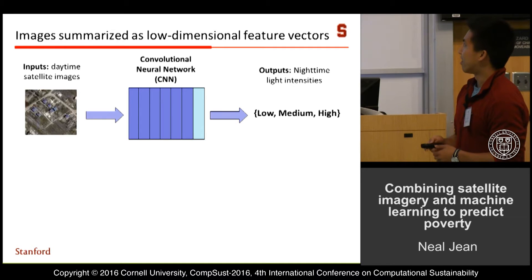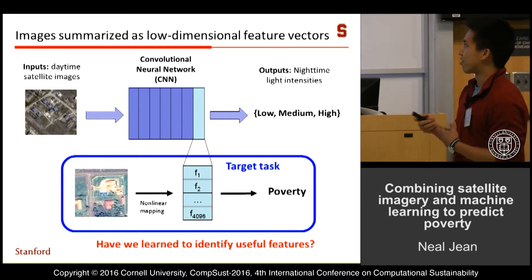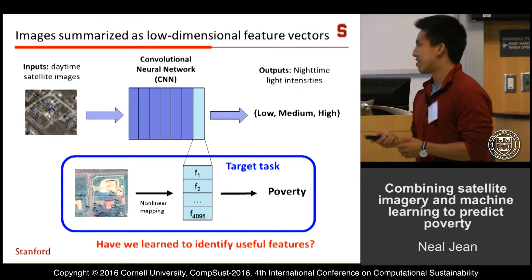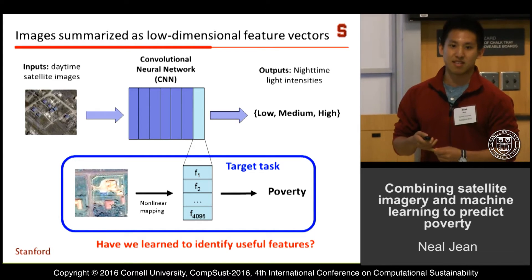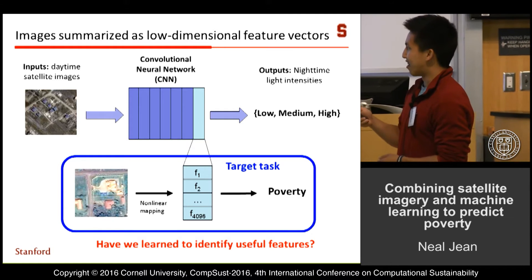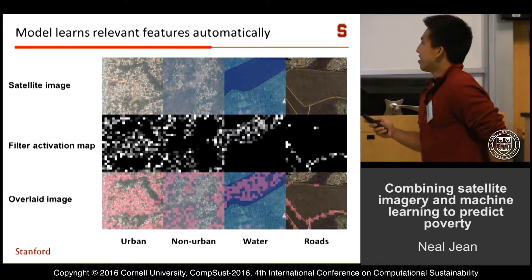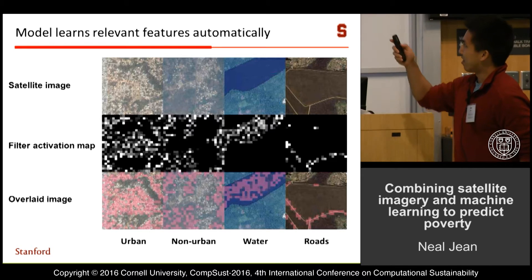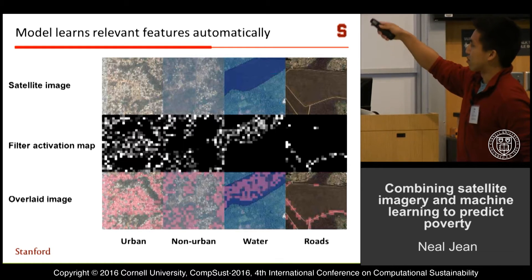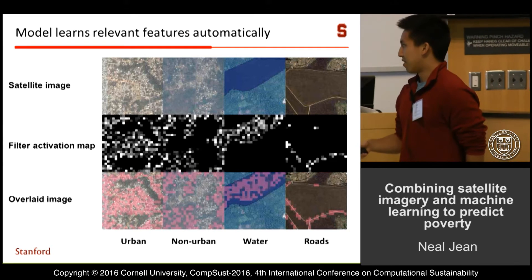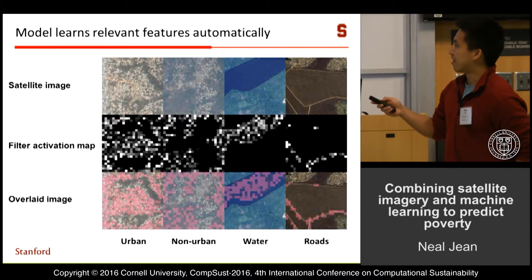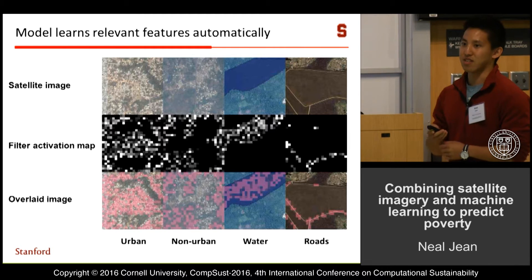Our training pairs are satellite images paired with their nighttime light intensity label, and we have this data everywhere so we can train a very complex model. We train a CNN to do this three-class classification task, then take the features our CNN learns to extract and use those features to predict poverty. You can see here that each column corresponds to one filter, and they roughly correspond to filters that identify urban areas, non-urban areas, water, and roads in satellite imagery — things you might hand-design if you were building features yourself.